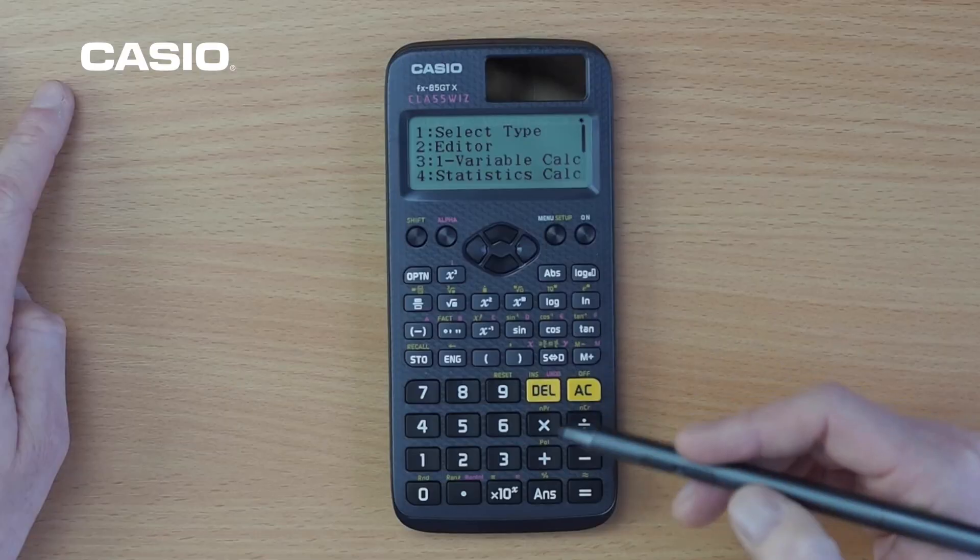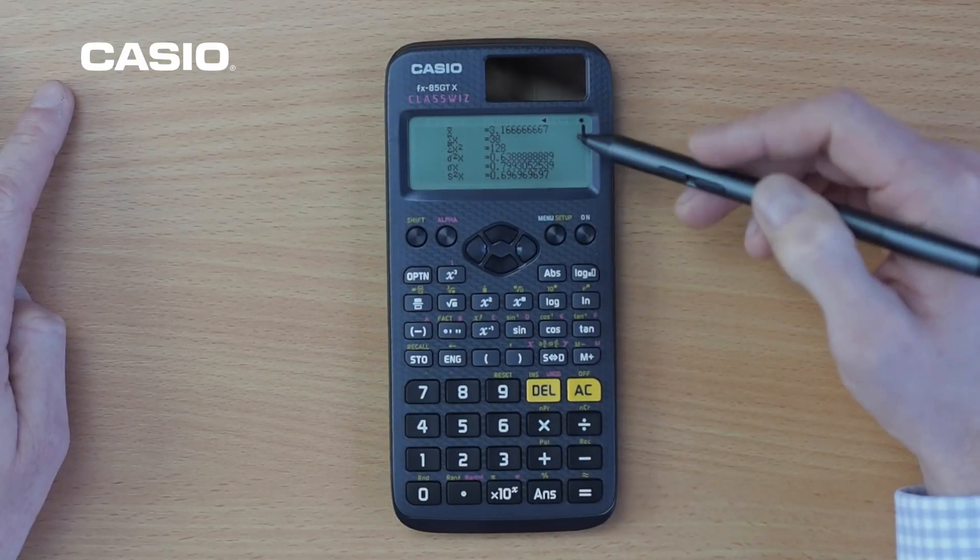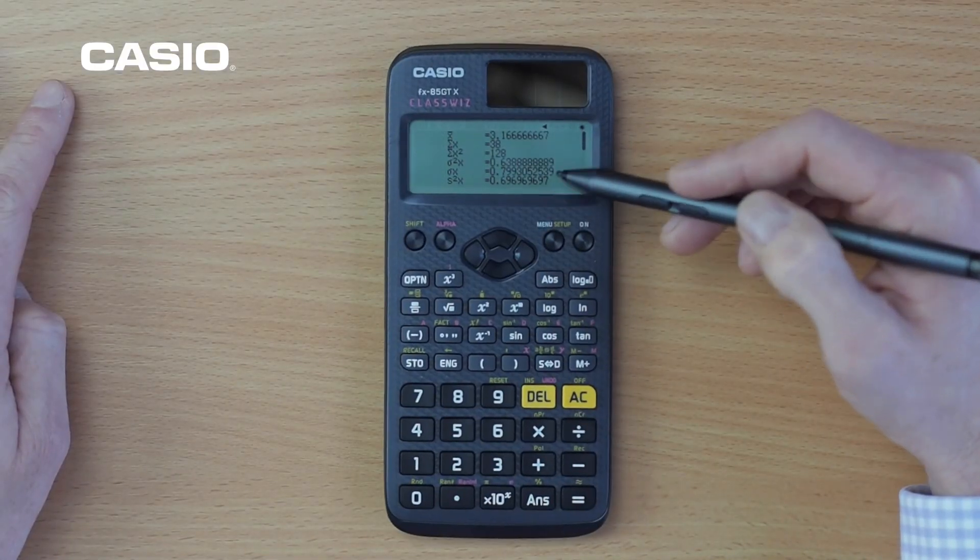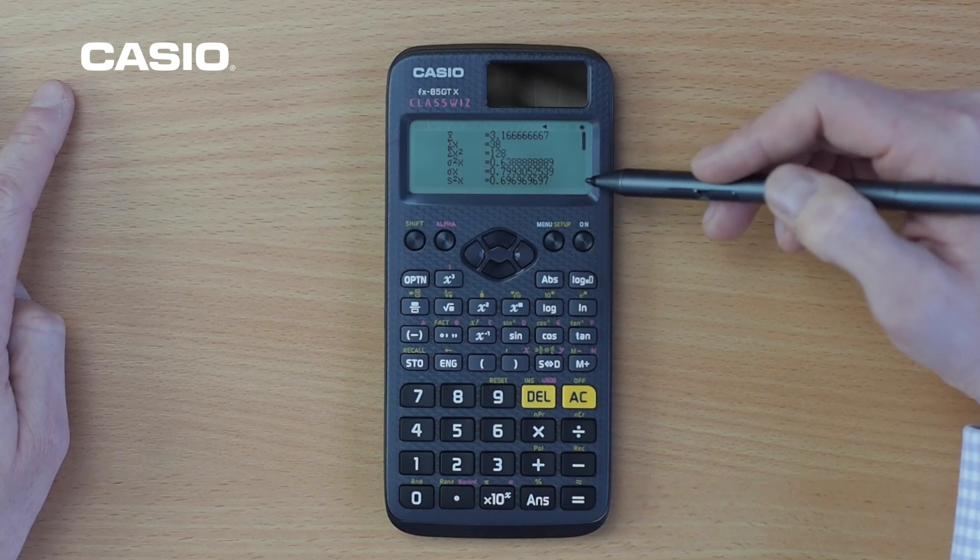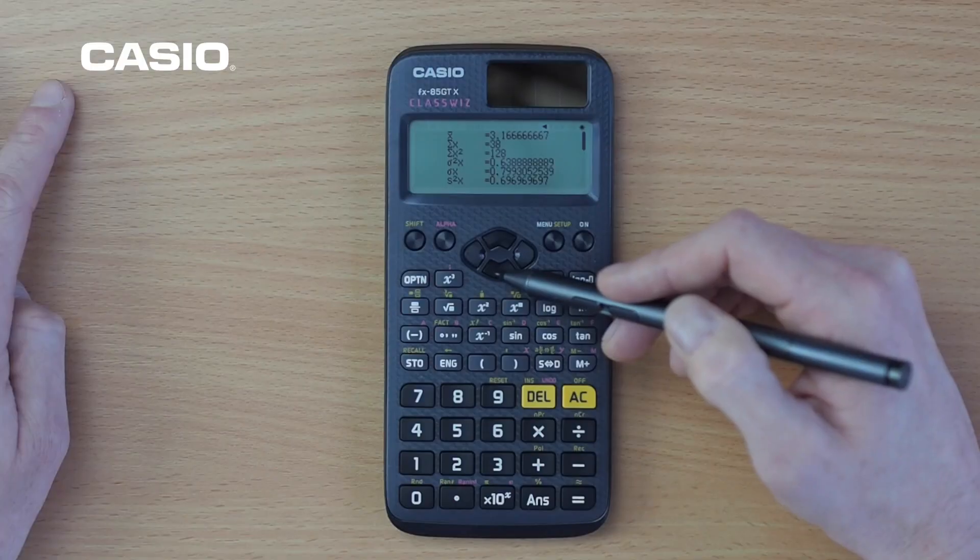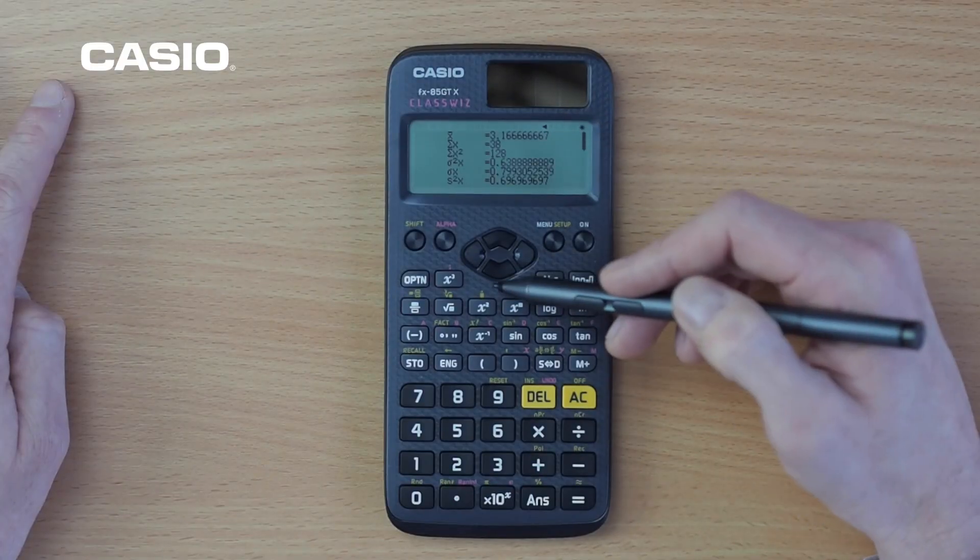Okay and we're going to do some one variable calculations. Straight away here we actually have all the summary statistics. We've got the scroll bar down the side and the statistics take advantage of the new four times higher resolution. So we've got X bar for instance here.